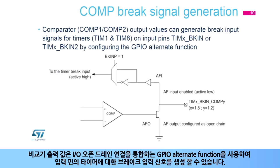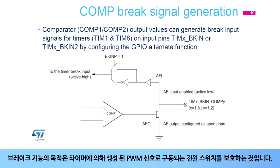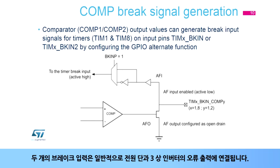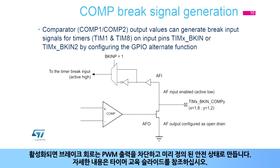Comparator output values can generate brake input signals for timers on input pins using GPIO alternate function selections, incorporating the I/O open-drain connection. The purpose of the brake function is to protect power switches driven by PWM signals generated by timers. The two brake inputs are usually connected to fault outputs of power stages and three-phase inverters. When activated, the brake circuitry shuts down the PWM outputs and forces them to a predefined safe state. Please see the timer training slides for more details.